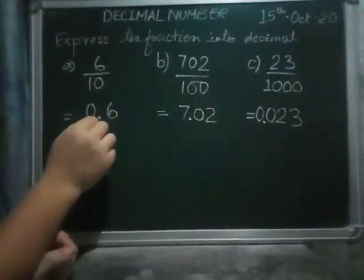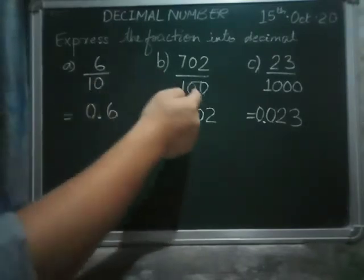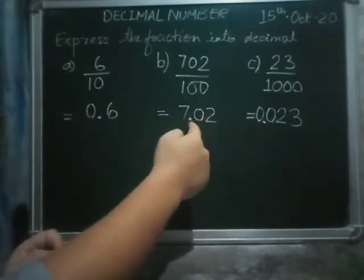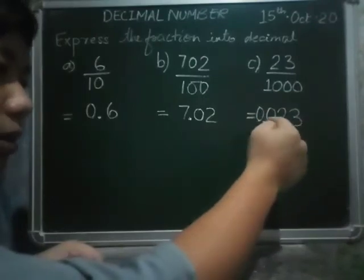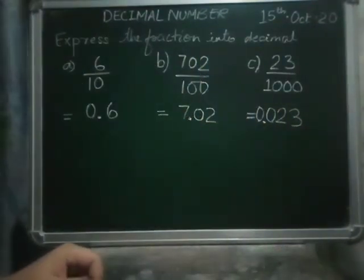...ten, you need to have the point just before one number. If there is hundred, you have to write the point before two numbers. And if we have thousand, then we have to write the point before three numbers. Very simple as that.